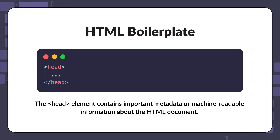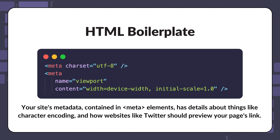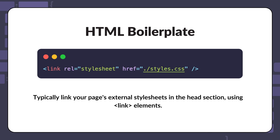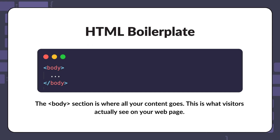The head section contains important behind-the-scenes information. Your site's metadata, contained in meta elements, has details about things like character encoding and how websites like Twitter should preview your pages. Your site title, found in the title element, determines the text that appears in the browser tab or window. You'll typically link your page's stylesheet and script files in the head section using link elements. The body section is where all your content goes — this is what visitors actually see on your web page.